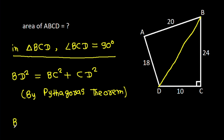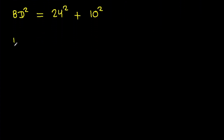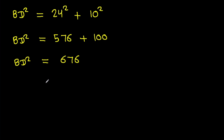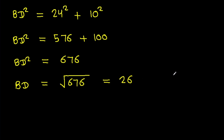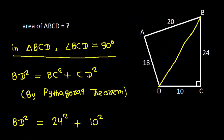BD² is equal to 24² plus 10², which is 576 plus 100. BD² is 676, so BD equals the square root of 676, which is 26. So we get BD is 26.